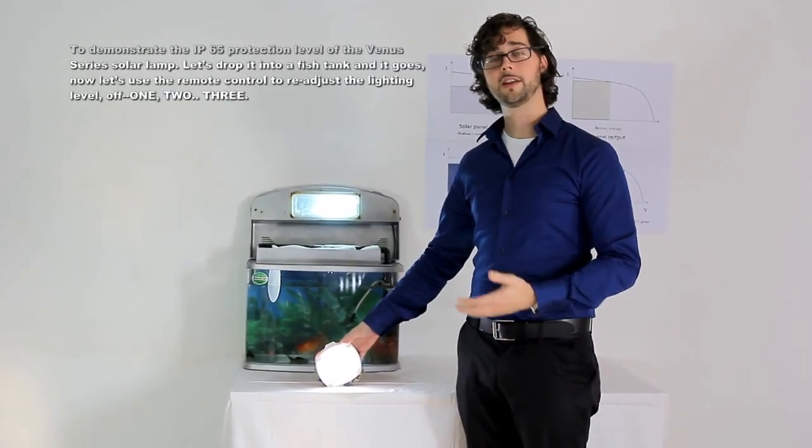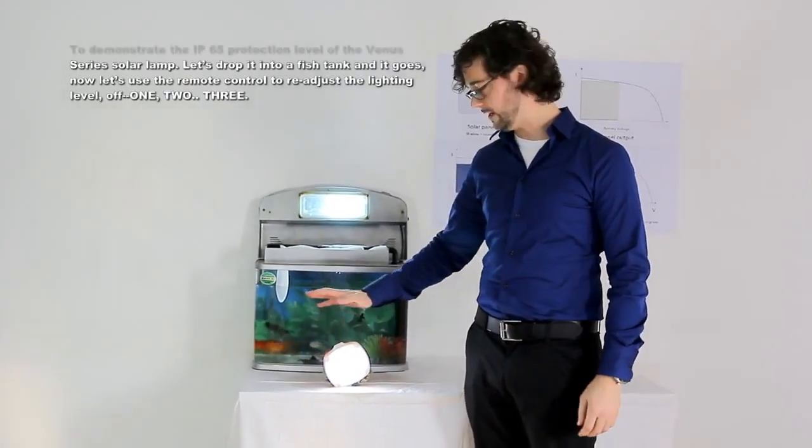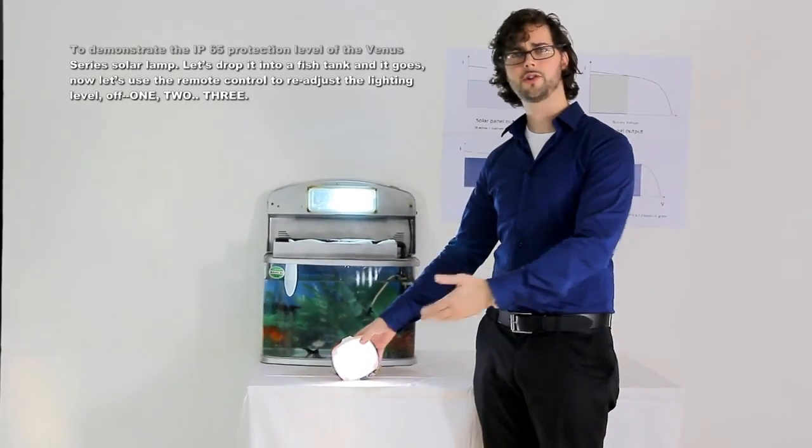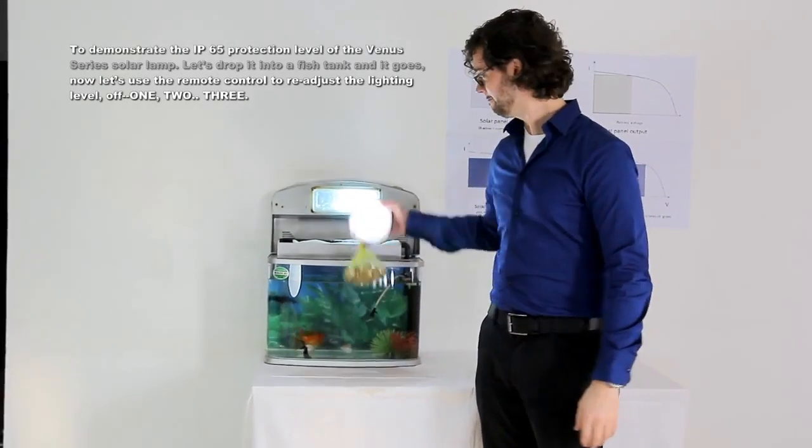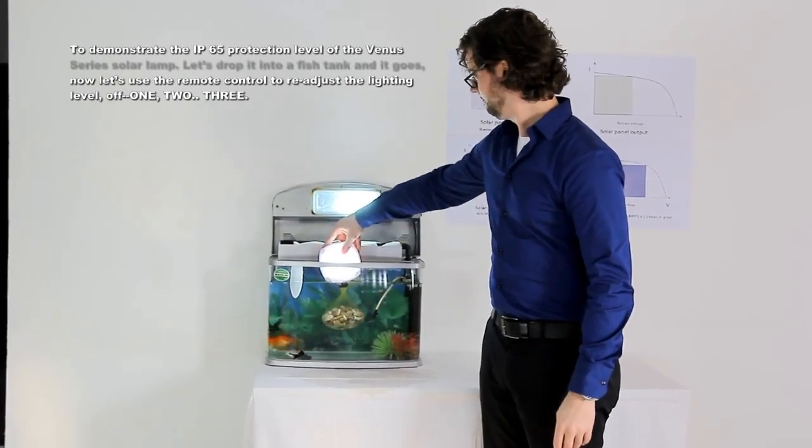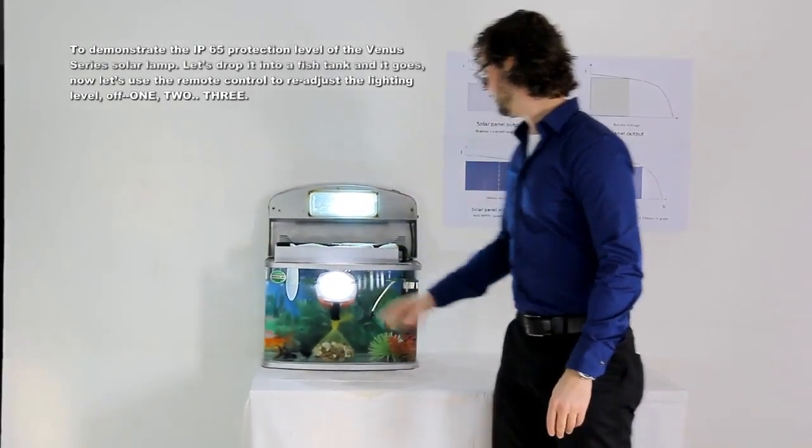To demonstrate the IP65 protection level of the Venus series solar lamp, let's drop it into a fish tank. In it goes.